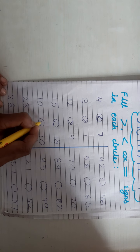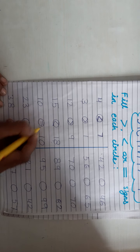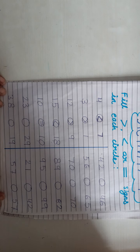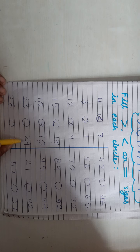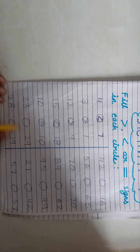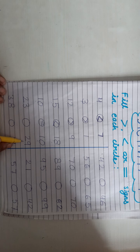We are going to use the equal sign. Equal means same — we are going to use it when numbers are the same. For example, 23 and 29.